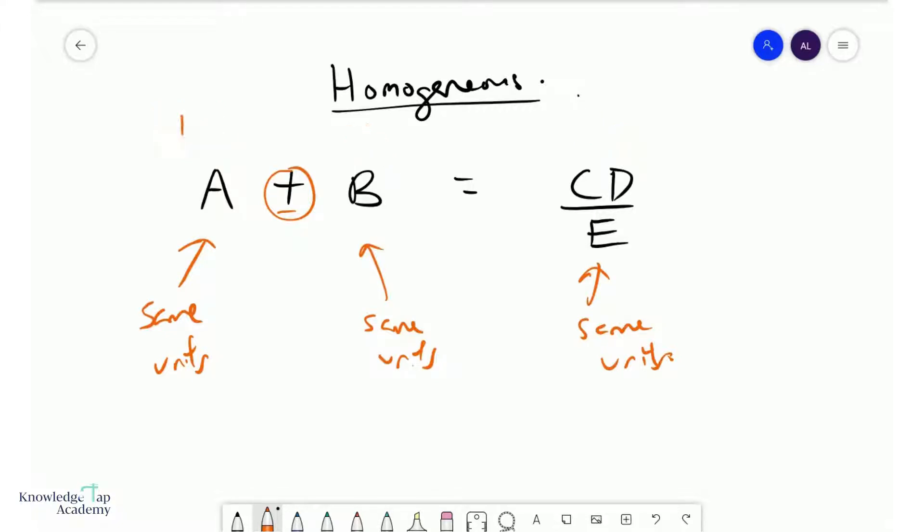So when you have basically quantities which are added, subtracted, or on the other side, or on either side of an equal sign, they must all have the same units for the equation to be considered as homogeneous.